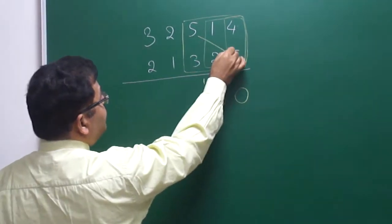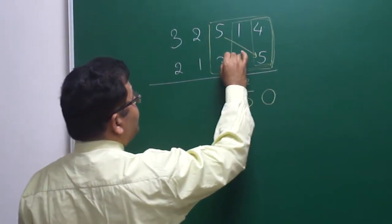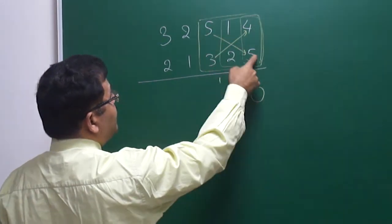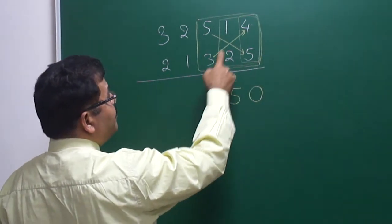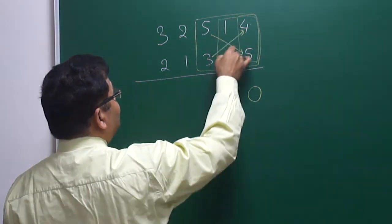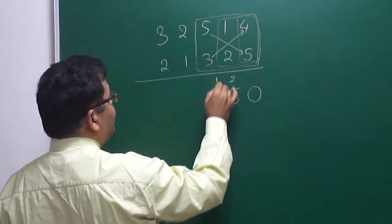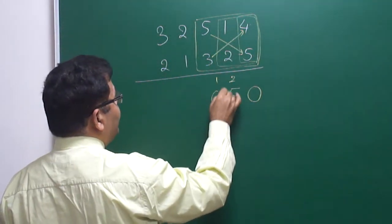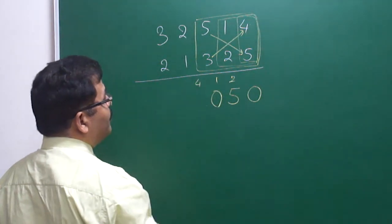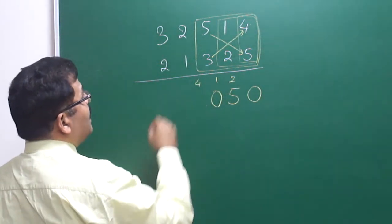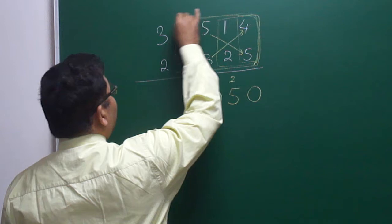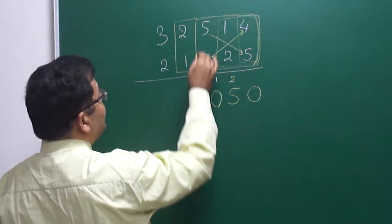Now taking three together: 5 × 5 = 25, then cross multiply — 5 × 5 = 25, plus 12 = 37, plus 2 = 39, plus 1 = 40, so write 0, carry 4. Taking four at a time — try to understand and prefer cross multiplication.